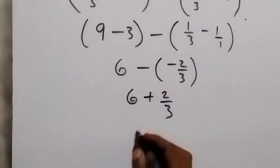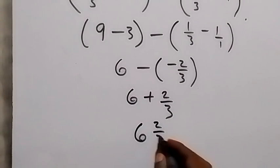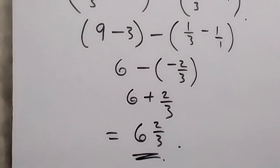Which gives us 6 plus 2 over 3. Therefore, the evaluation of that gives us 6 and 2 over 3.